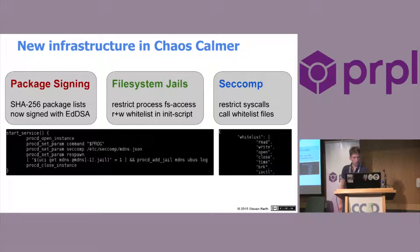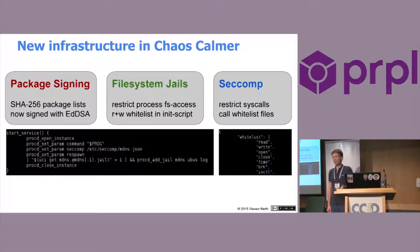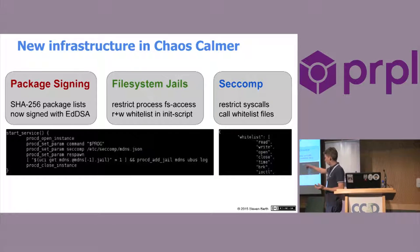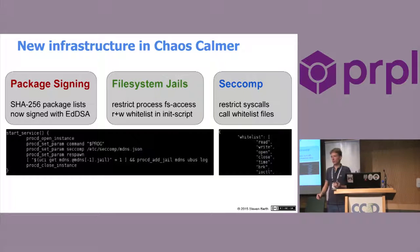We also now have filesystem jails and seccomp support, done by John and Felix as well. This is support in our procd init replacement in which you can define whitelists for processes — for which files they can access, and all the rest they can't access. This includes services that can be called by the daemon. In a usual procd-enabled init script, you can define procd_set_jail and add a list of services. You can find an example in the DNS mask init script, where you can see how to add files to the jail.